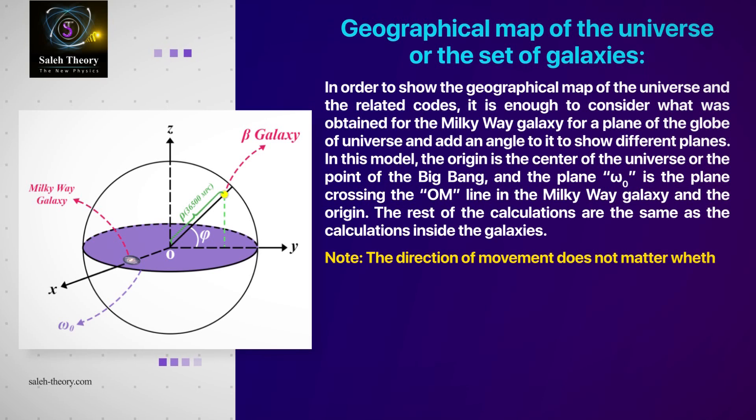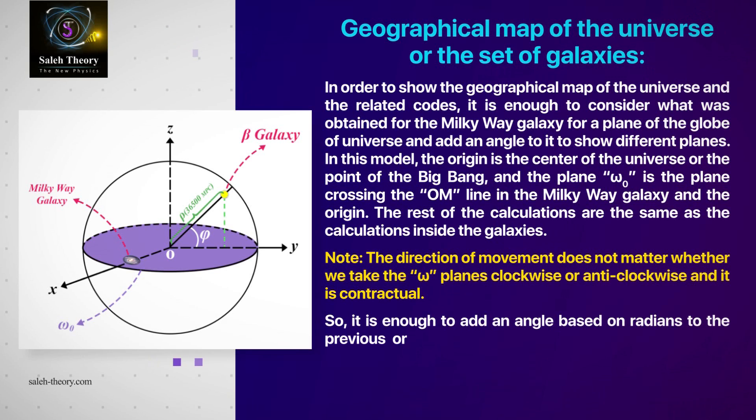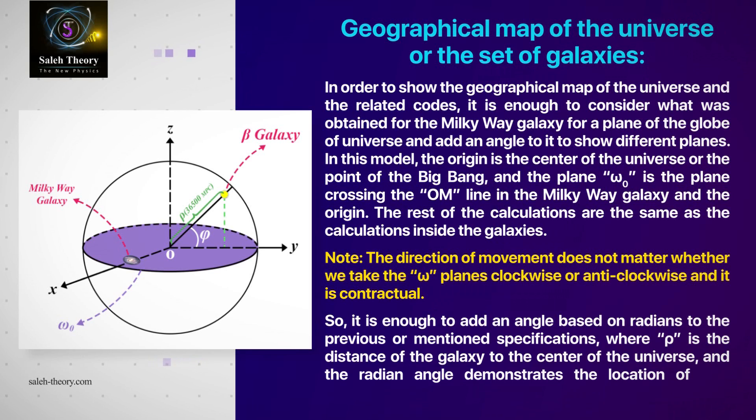Geographical map of the universe or the set of galaxies. In order to show the geographical map of the universe and the related codes, it is enough to consider what was obtained for the Milky Way galaxy for a plane of the globe of universe and add an angle to it to show different planes.